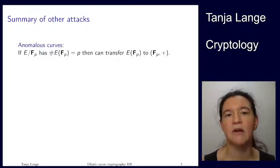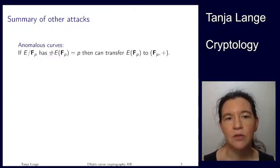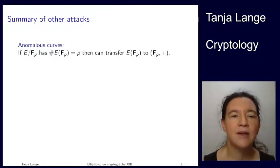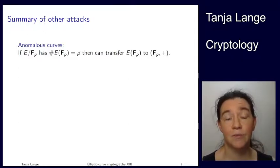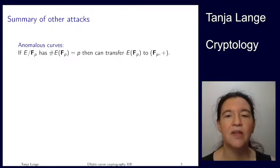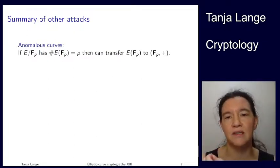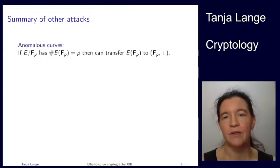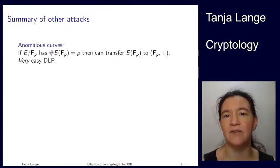So are there any other classes of elliptic curves where it's scary? You've seen that a singular curve is something scary. We have to watch for the embedding degree. And so what else do we have to watch? There's one class called anomalous curves. Anomalous sounds even more special than supersingular, and is more special indeed, because anomalous means that the number of points over Fp is p. For supersingular curves it was p plus one for large prime fields. If you happen to have a curve where the number of points over Fp is p, then you can transfer the discrete log problem to the additive group over Fp. This is even worse than what we've seen before. This has a very, very easy discrete log problem.